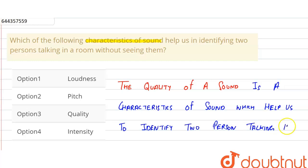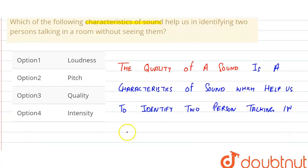talking in a room. So we know that the quality of a sound is the characteristic of a sound which helps us to identify two persons talking in a room. So here if you see the options, option number three